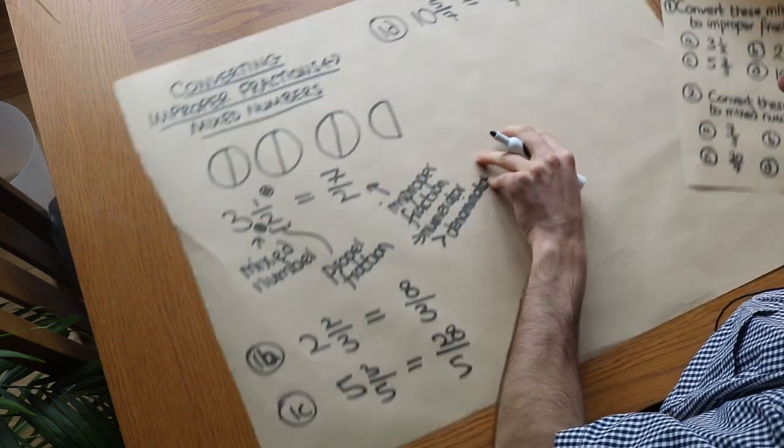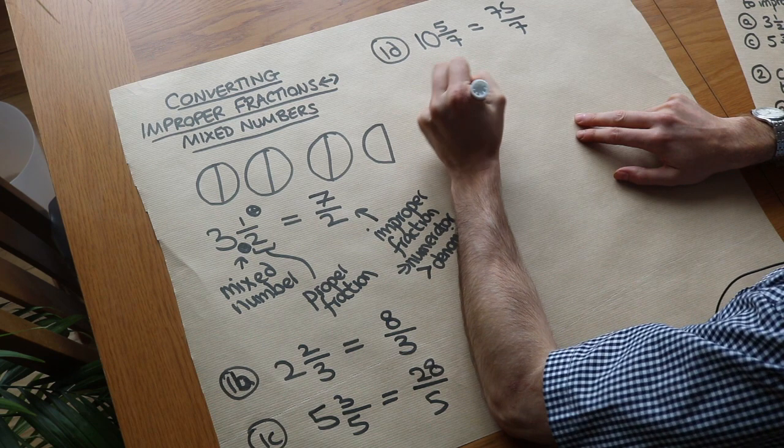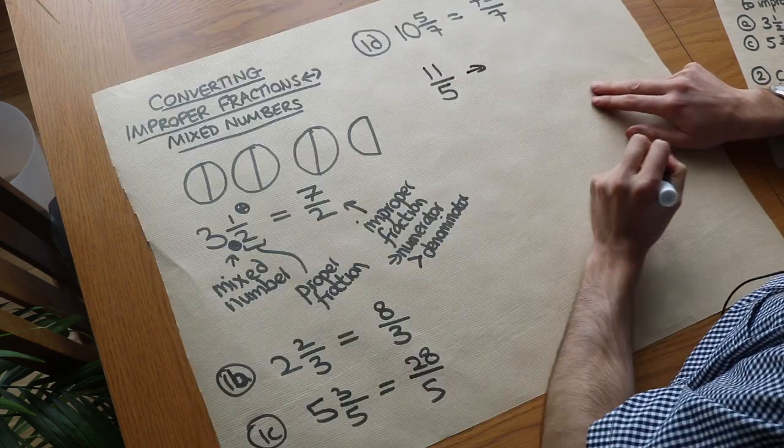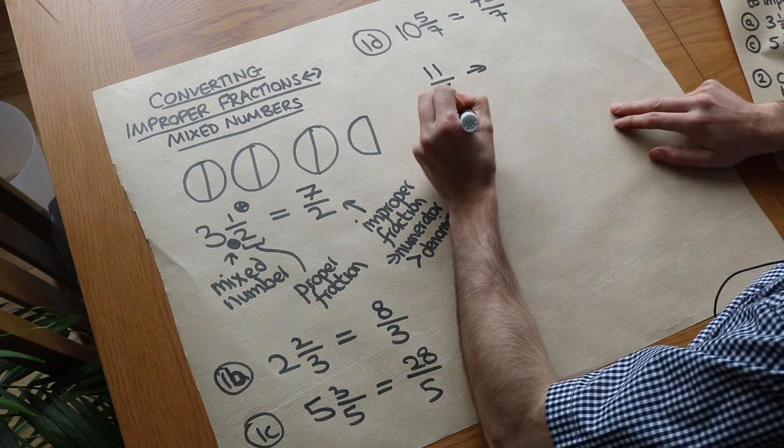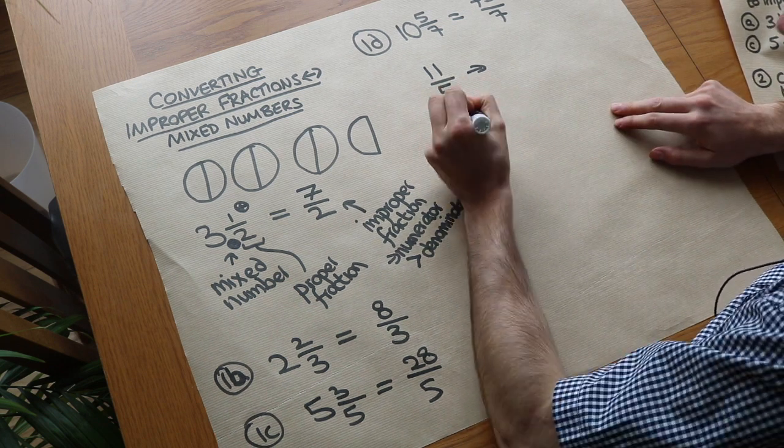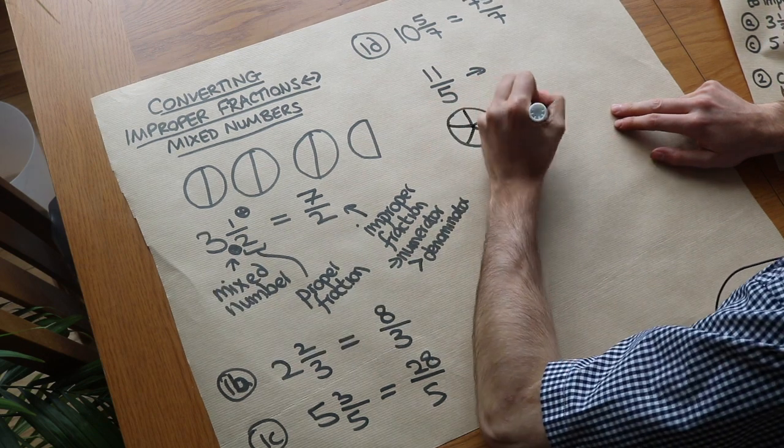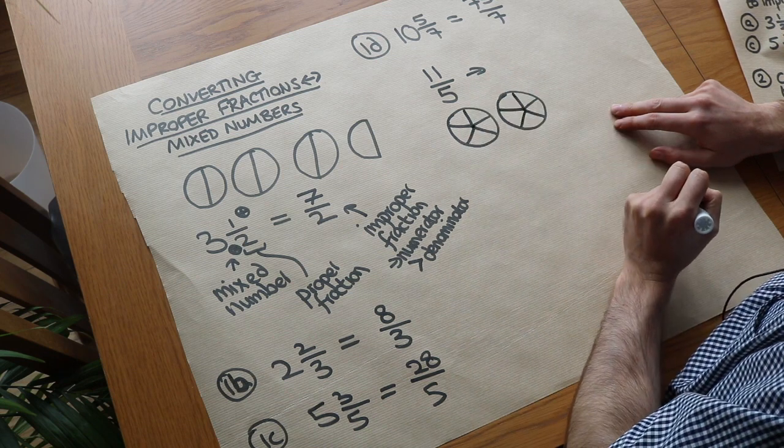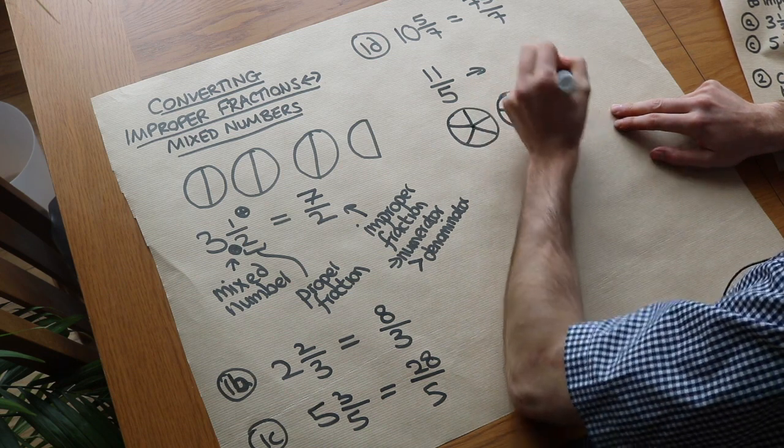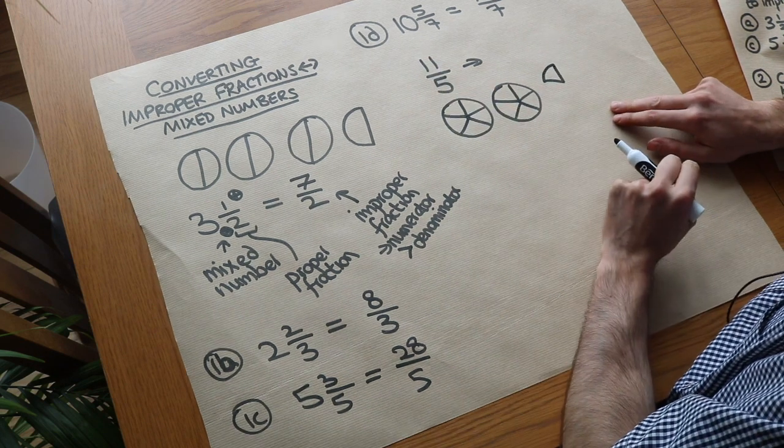Now what about if we want to go the other way? So let's say we had, I don't know, 11-fifths and we want to work out what that was as a mixed number. Now let's consider if we had 11-fifths as pizzas. So I've got a pizza consisting of fifths, so we've got five-fifths there, but we could have another five-fifths. We're up to 10-fifths of a pizza and then we could have a further fifth of a pizza. So we've got 11-fifths of a pizza in total.